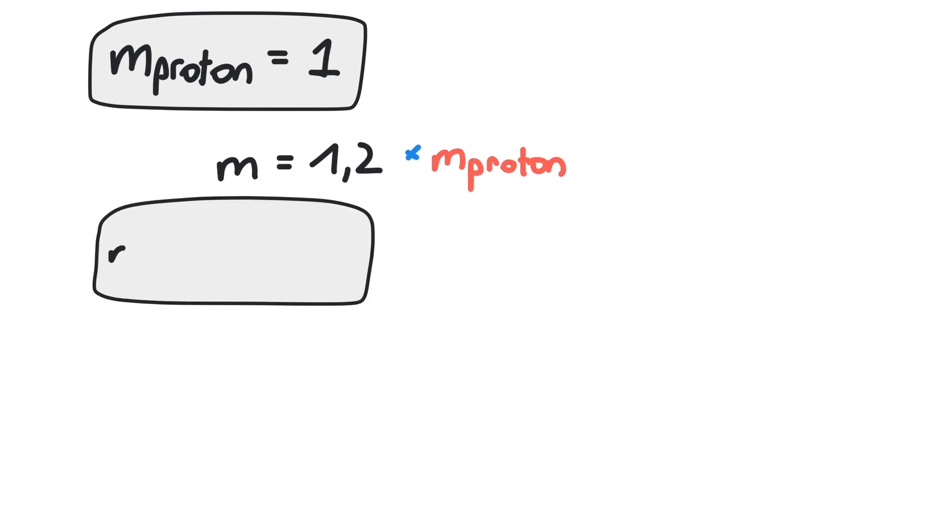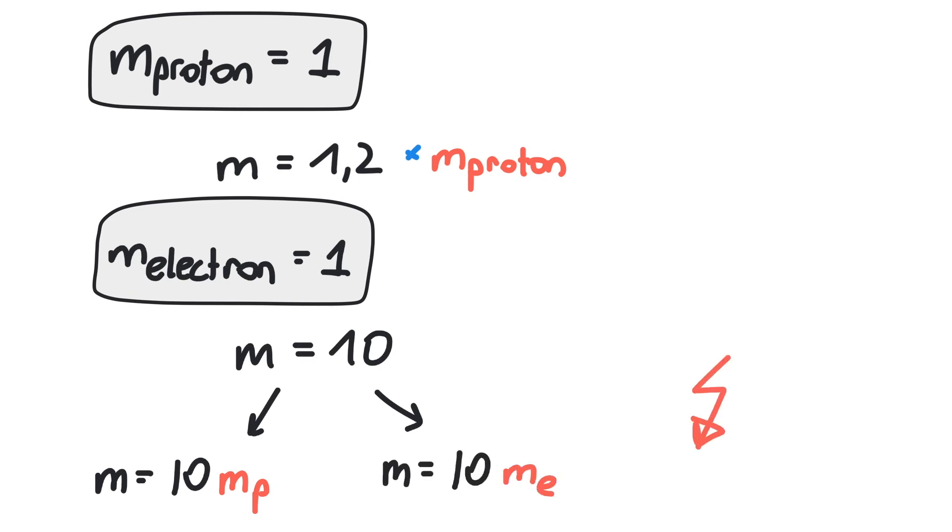However, you cannot set any constant to 1. Say, we choose the proton mass to be equal to 1. That means, if something has the mass 1.2, it has a mass of 1.2 times the proton mass. In this unit system, we are not able to also set the electron's mass to 1. This would lead to an ambiguity. What would m equals 10 mean? 10 times the proton mass? 10 times the electron mass?